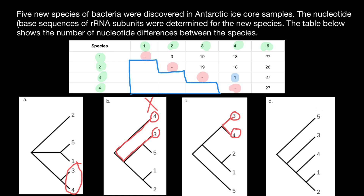Now let's analyze tree D. Species 3 and 4 have to be very close — but does being next to each other mean they are close? Remember, this distance directly correlates with time and accumulation of mutations. On this phylogenetic tree, the minimum distance is actually between species 1 and 2, and even the distance between 4 and 1 would be much smaller than between 3 and 4. So we can say right away that this is the wrong phylogenetic tree.